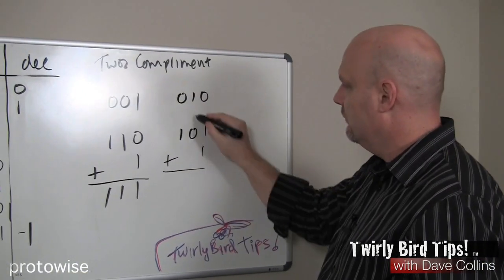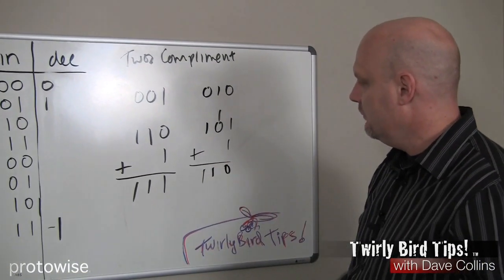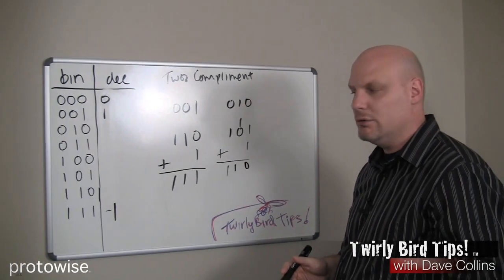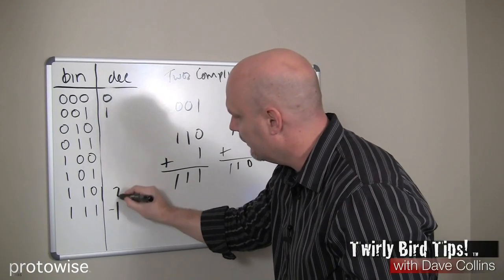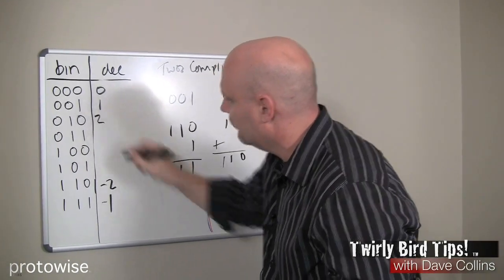If we add 1, 1, 0, 1, 1, 1, 0 would be our negative 2. Right here, and there it is. Of course, there's our 2 as well.